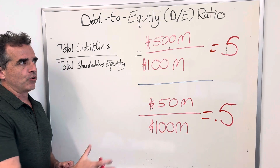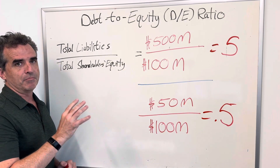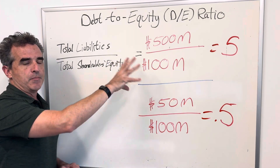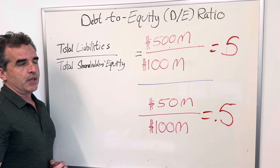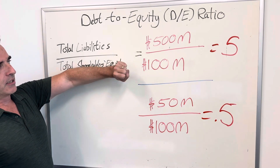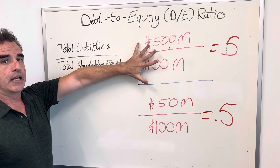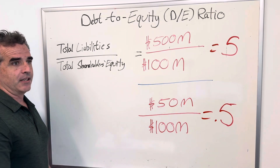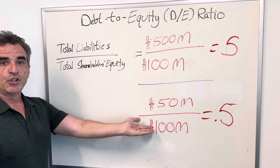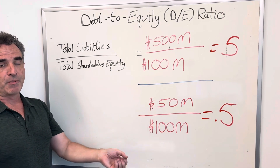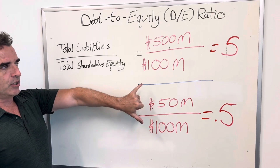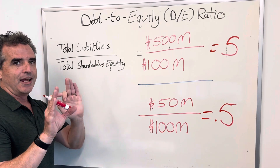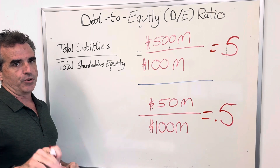The key thing here is that when you're looking at ratios like this, you want to do a comparison of one organization to another in the same industry. Organizations in commercial real estate carry a lot of debt in order to finance projects and buy assets, versus say a general contractor which may have low debt. So in order to do this comparison, it's critical that you're looking at apples to apples versus apples and oranges.